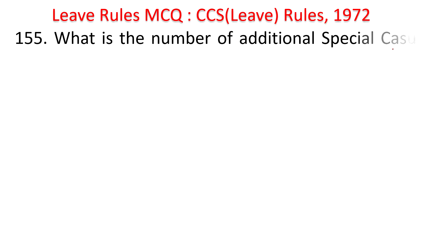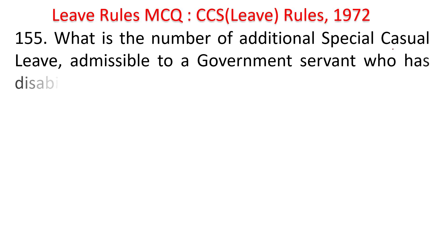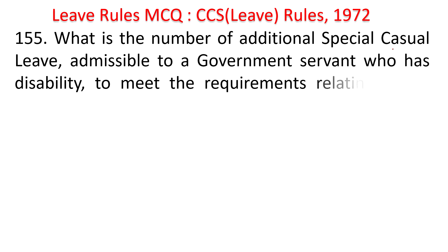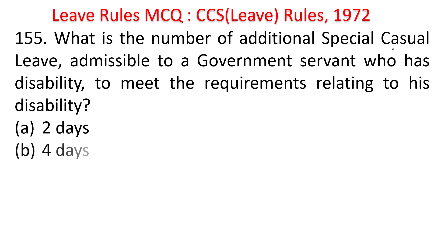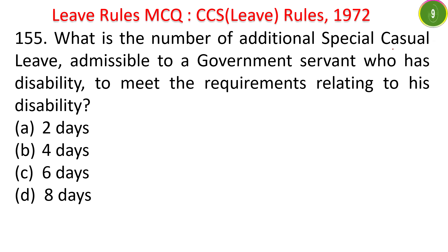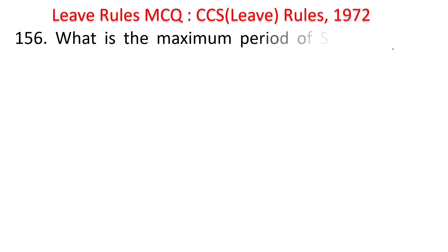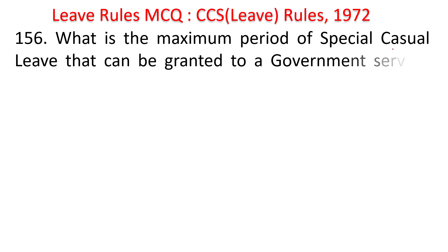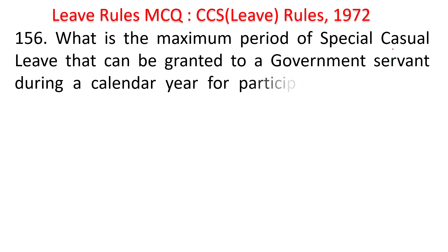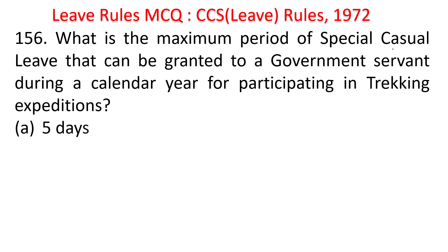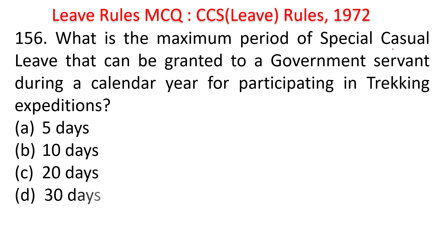What is the number of additional special casual leave admissible to a government servant who has a disability to meet requirements relating to his disability? Options: 2, 4, 6, or 8 days. The answer is 4 days. What is the maximum period of special casual leave for participating in a trekking expedition during a calendar year? Options: 5, 10, 20, or 30 days. The answer is 30 days.